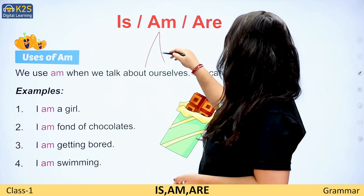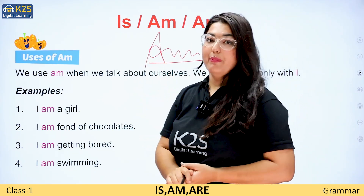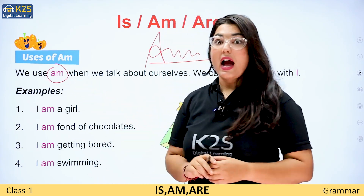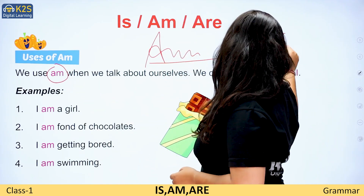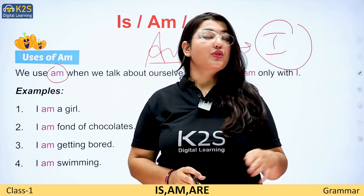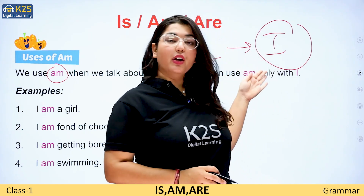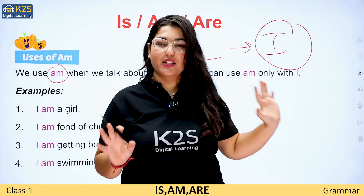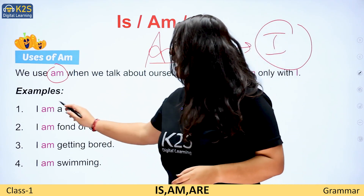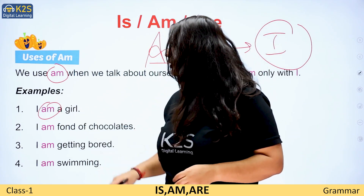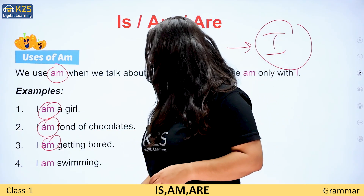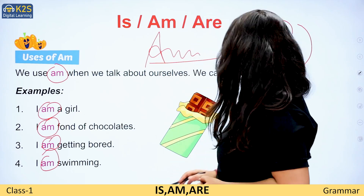Moving to the use of 'am'. We use 'am' only with 'I'. For example: I am a girl. I am fond of chocolates. I am getting bored. I am swimming.